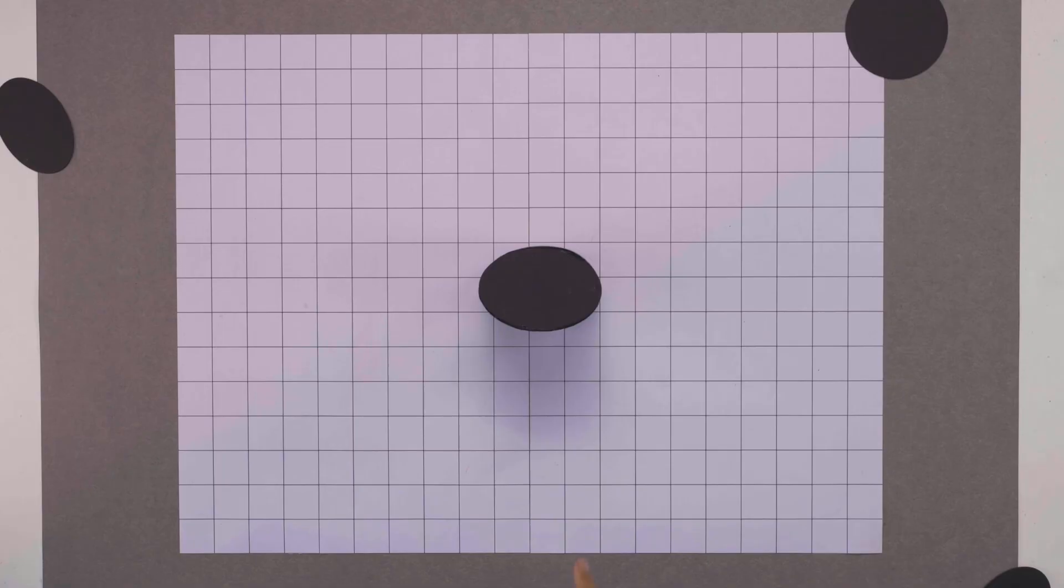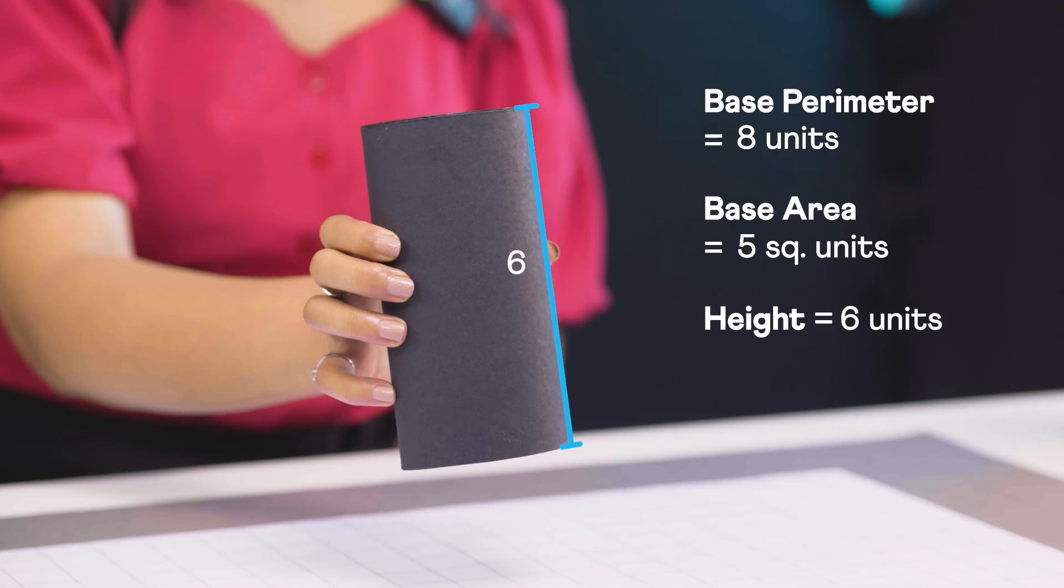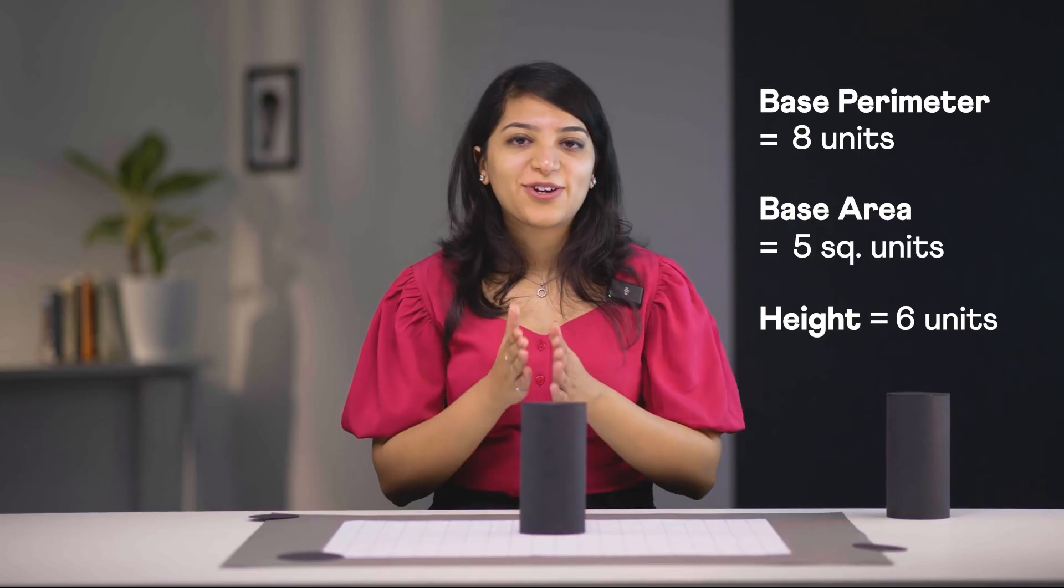Now how about this oval shaped cylinder? The perimeter of this oval shape is 8 units and its area is 5 square units and the height of this cylinder is 6 units. Can you find the surface area of this cylinder?